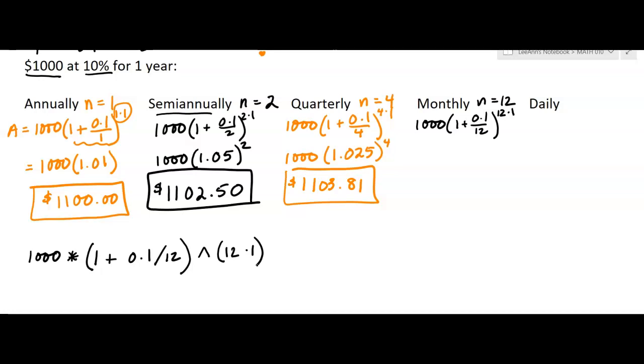So it looks like I'm getting $1,104.71, so a little bit more money. Not that much more – really, not even a whole dollar more, but that's okay.